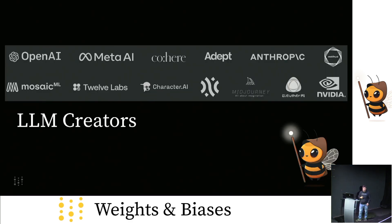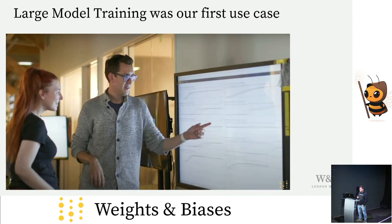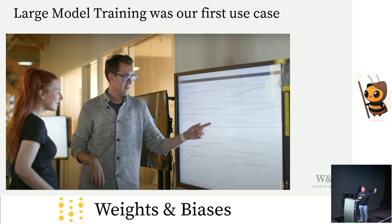I want to start with what we do for LLM creators. These companies all build LLMs and they're all long-time customers of Weights and Biases that we feel super proud of. Large model training was our very first use case — this is us at OpenAI back in 2018 when it was really just a handful of people. We knew we were onto something when OpenAI decided to put that Weights and Biases dashboard on their wall. We had about ten users at the time, and I think nine of them were inside of OpenAI.